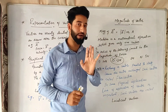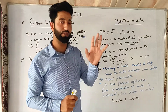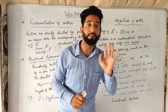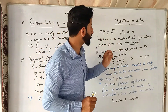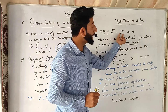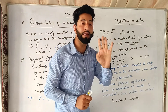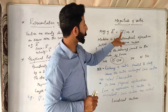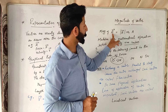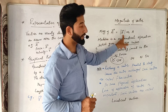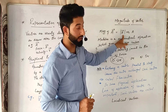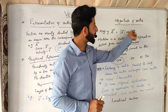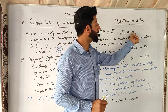Lekin agar sirf hum magnitude ki baat karein — vector full vector ki baat nahi kar rahe, positive bhi ho sakta hai, negative bhi ho sakta hai — lekin agar sirf hum magnitude ki baat karein, magnitude kabhi negative nahi ho sakta. Magnitude of vector A ko aise modulus of A karte hain, ya sidha A se arrow hata ke. Matlab hume sirf magnitude chahiye — magnitude humeisha positive hoga.